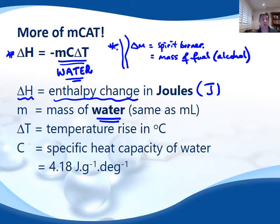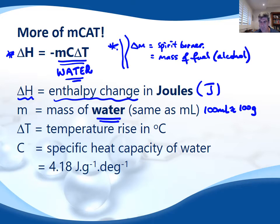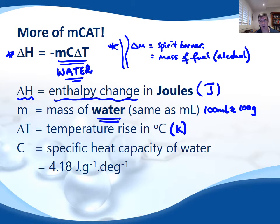Remembering that the density of water is 1 gram per mL, 100 mL weighs 100 grams. The temperature rise in degrees Celsius is equivalent to the temperature rise in Kelvin, because even though they start at different points on the scale, they go up by equal increments.